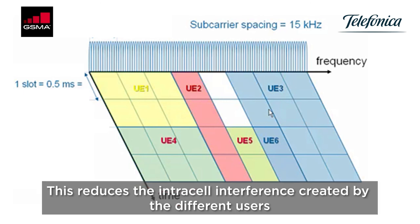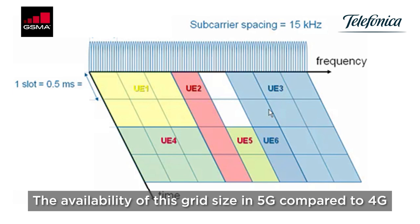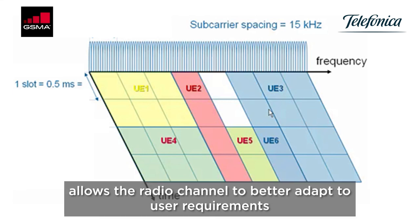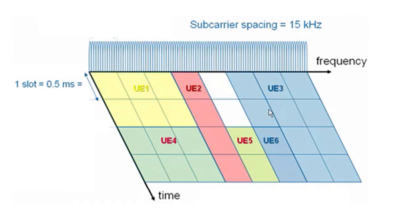This system reduces the intracell interference created by the different users and creates a very strong signal against multipath. The variability of this grid size in 5G compared to 4G allows the radio channel to better adapt to user requirements in terms of latency, speed and reliability.